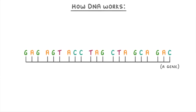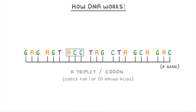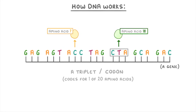To understand how mutations affect our body we need to quickly recap how DNA works. A gene is just a section of DNA that codes for a protein, and all it really is is a particular sequence of bases. Each group of three bases is called a triplet or a codon and codes for one of the twenty different amino acids. So this codon here, ACC, might code for amino acid 7, while this other one, CTA, could code for amino acid 18.